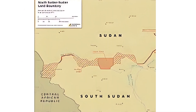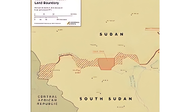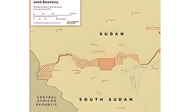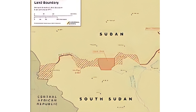Historical context: to understand the split between South Sudan and Sudan, it's essential to delve into the historical context of their relationship. Sudan, as a unified entity, has a long history of internal conflicts and tensions between its northern and southern regions. These tensions stemmed from cultural, religious, and ethnic differences exacerbated by colonial legacies and successive Sudanese governments' policies favoring the Arab-dominated North.